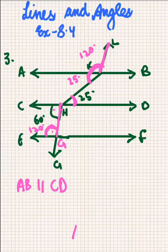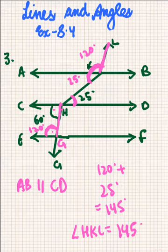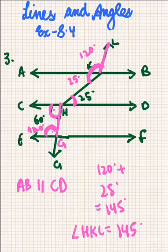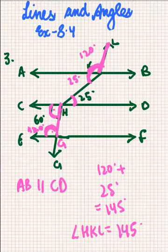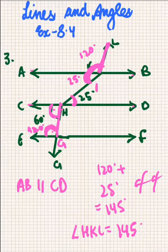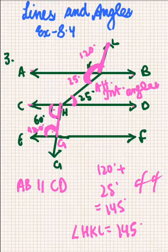So we have the measure of angle HKL, that is 145 degrees. To summarize: these two angles are co-interior angles, so this angle comes to 120 degrees. Since GH is parallel to KL, these are corresponding angles so that angle is also 120 degrees. And since AB is parallel to CD, this angle of 25 degrees equals the alternate interior angle. By drawing rough figures, you can observe all the angles and find the measures respectively.